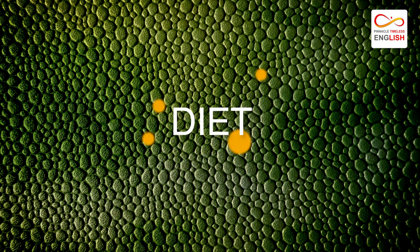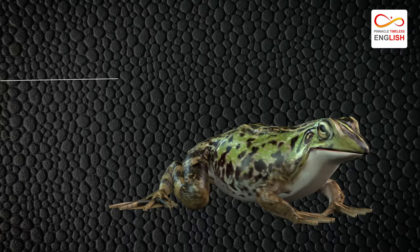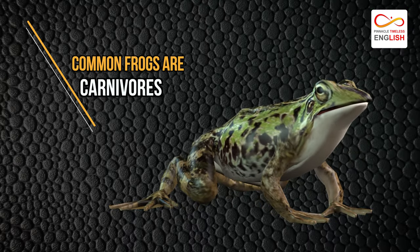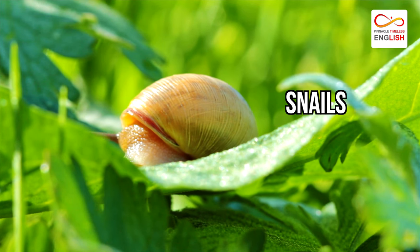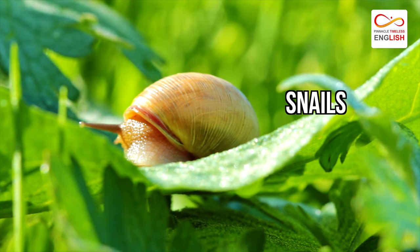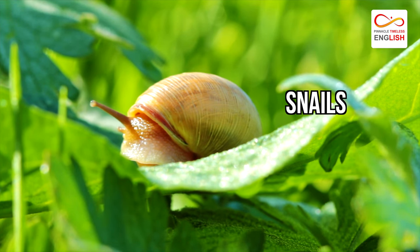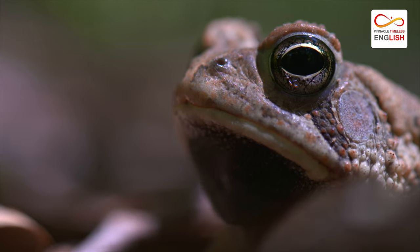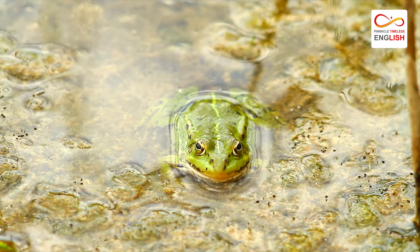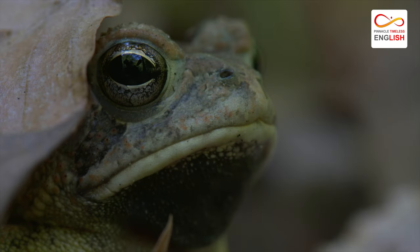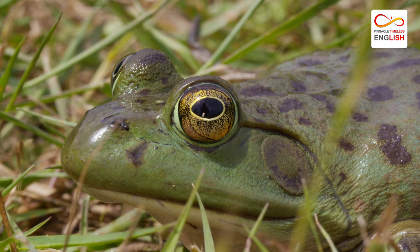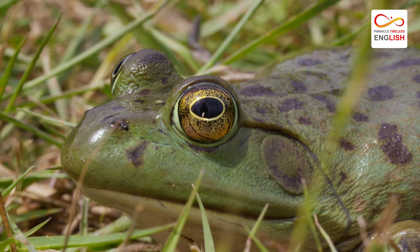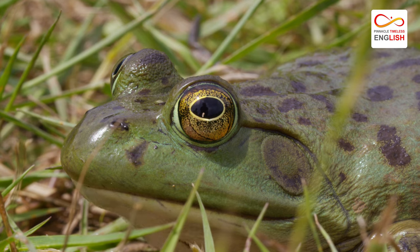Common frogs are carnivorous and feed on a variety of invertebrate prey, including slugs and snails, which makes them especially popular with gardeners. Despite their wide mouths, frogs drink by absorbing water through their skin and swallow using their eyes — they retract them into the head to help push food down their throat. When they moult, they usually eat the skin as it is a valuable source of nutrition.